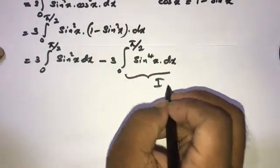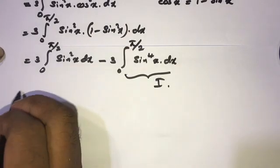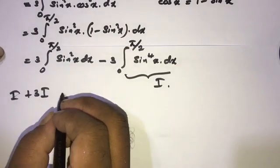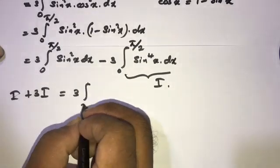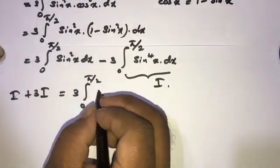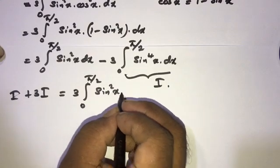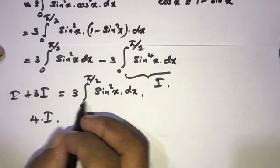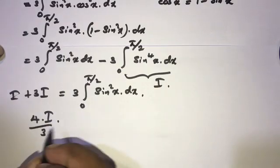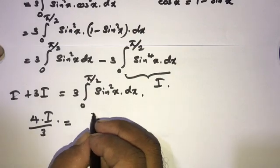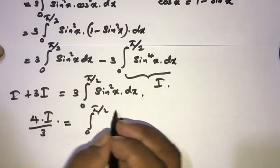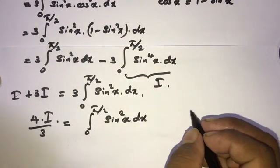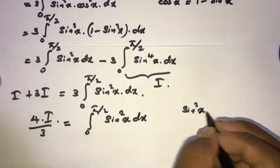We know that last integral is equal to I, so we can write: I plus 3I equals 3 times the integral from 0 to 5π/2 of sine squared x dx. That gives 4I, and dividing both sides by 4 yields 4I/3 equals the integral from 0 to 5π/2 of sine squared x dx.